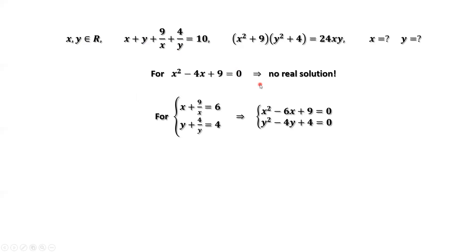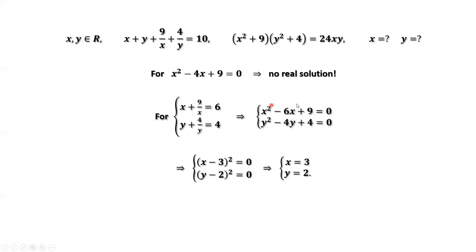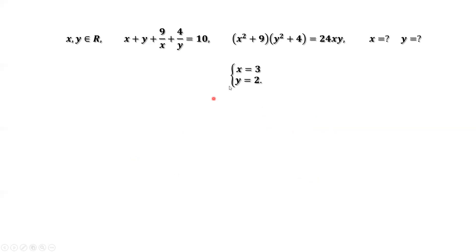So now we consider the second solution. Both sides of the second equation times y — let's simplify. We have y squared minus 4y plus 4 equals 0. Solving each equation one by one: factoring the left-hand side of the first equation gives x minus 3 squared. For the second equation, the left-hand side is y minus 2 squared. This implies x equals 3, y equals 2.